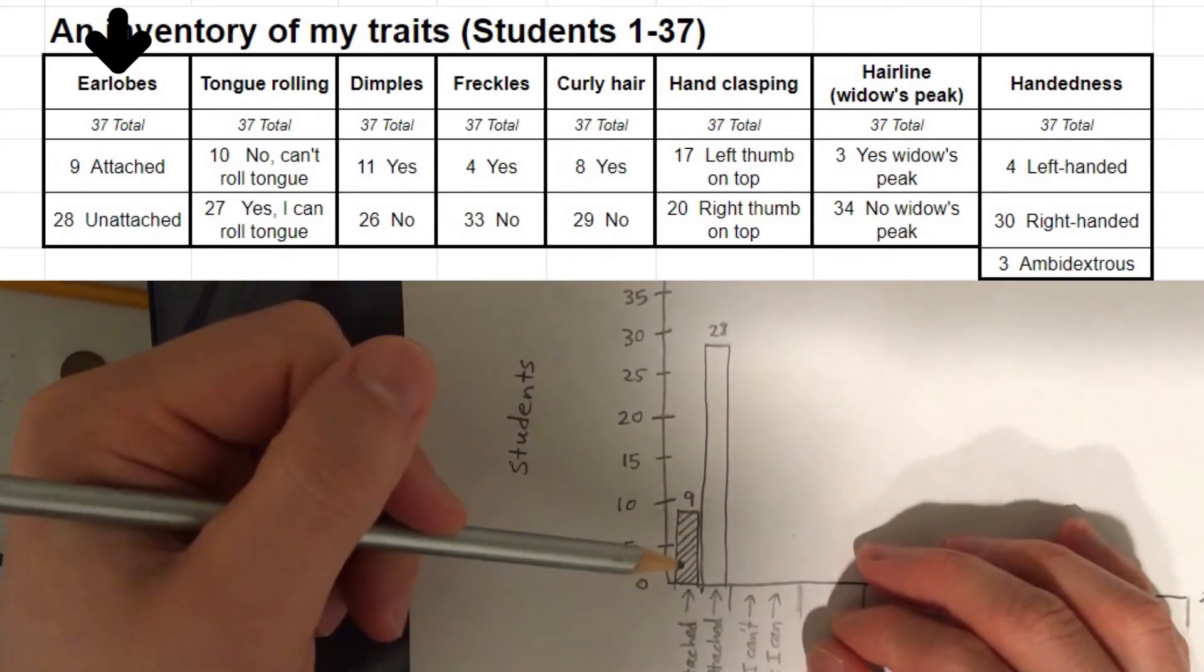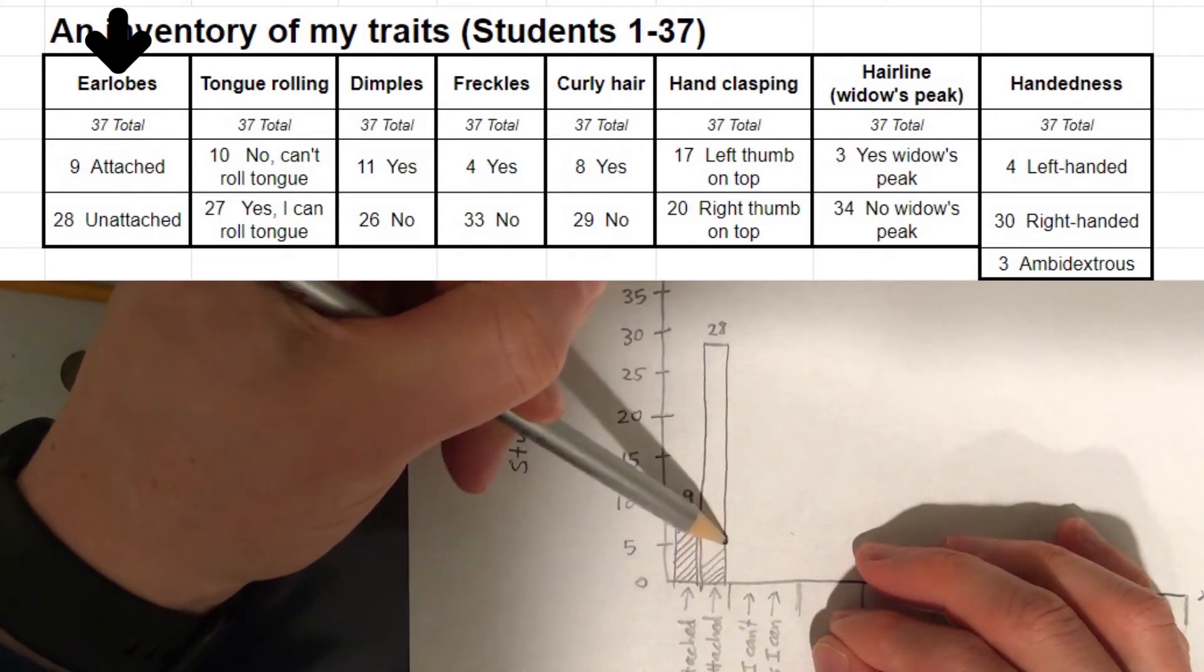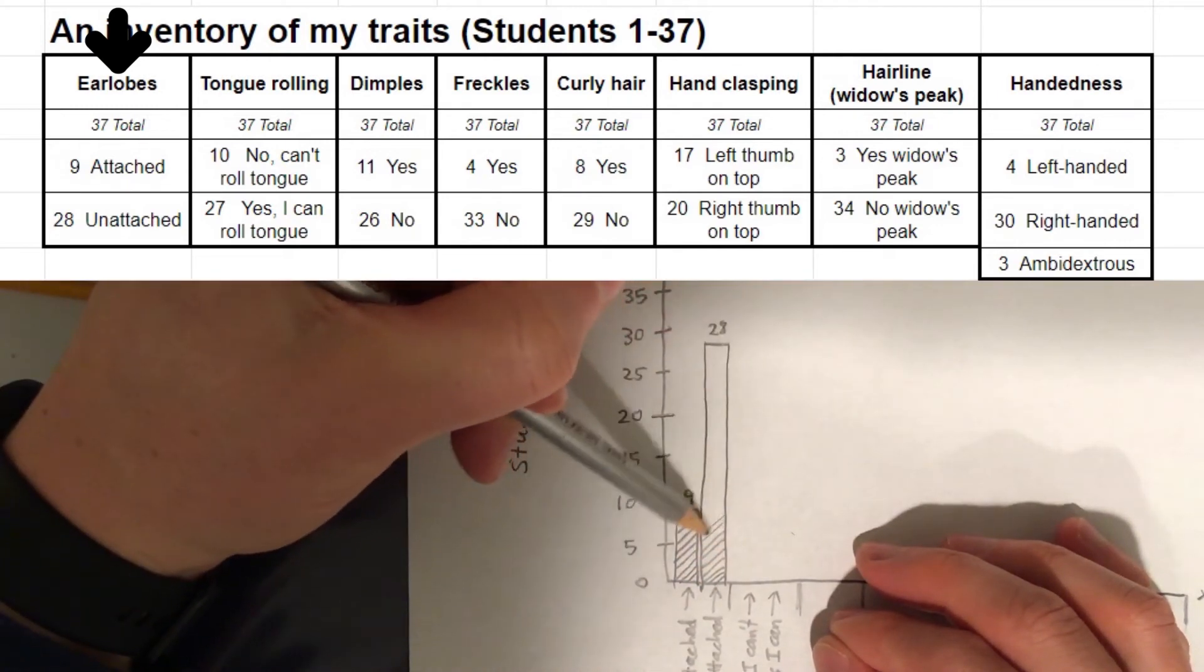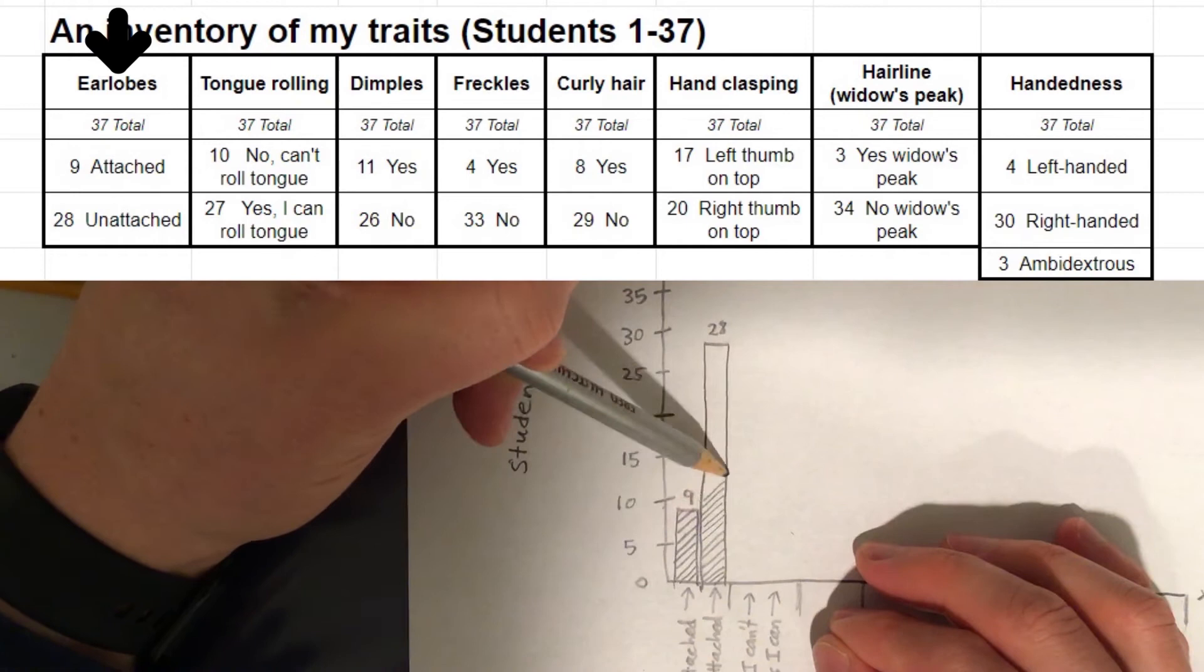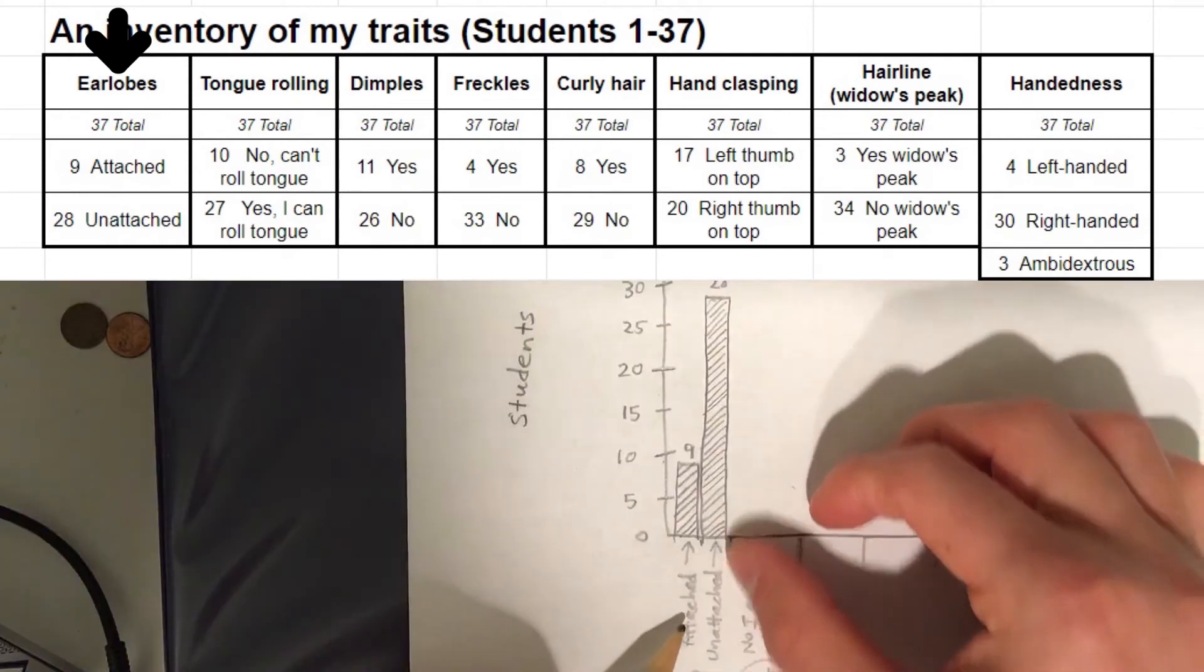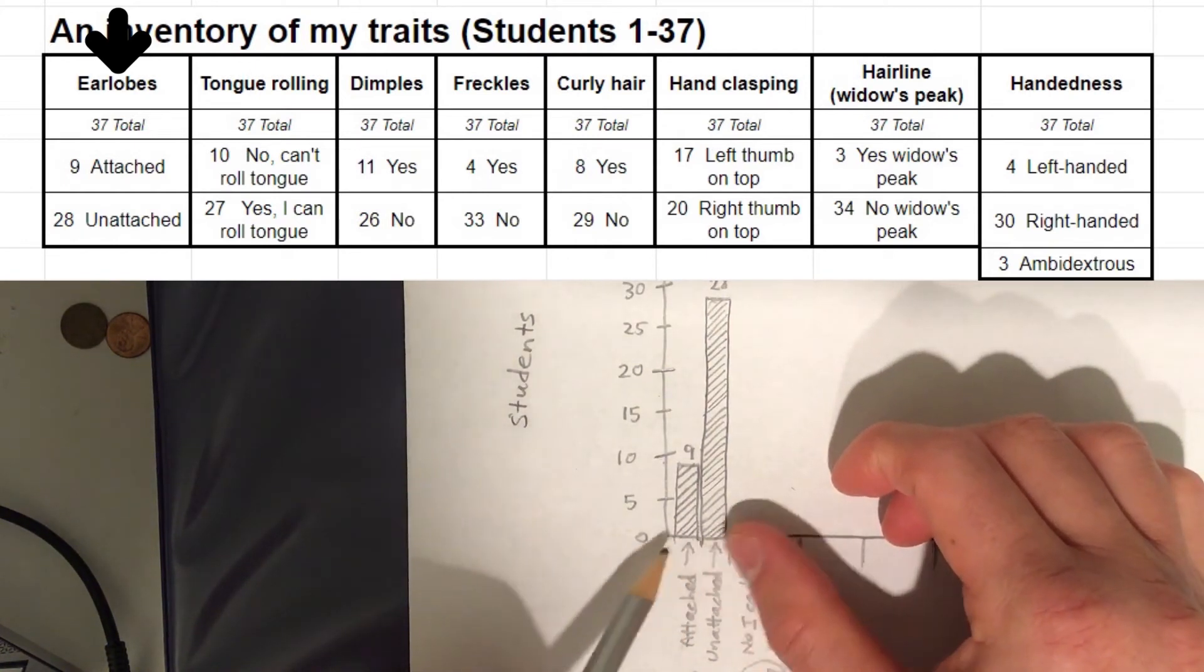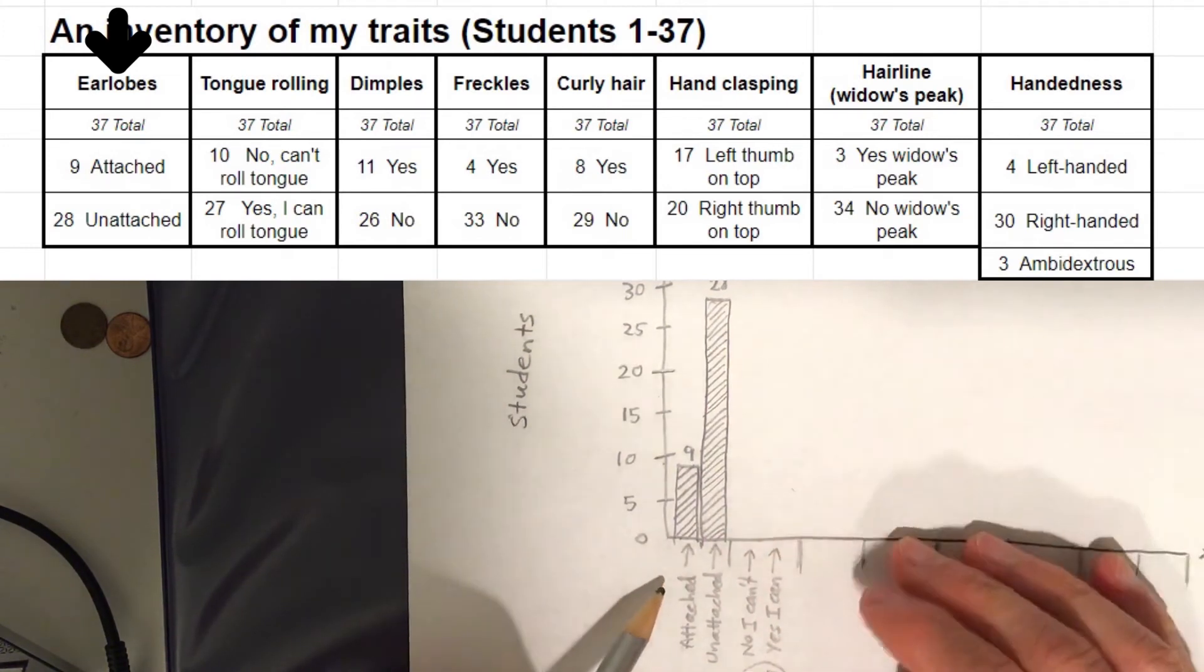For this one, I'm going to do diagonal lines. And unattached earlobes is 28. 28 students have unattached earlobes. So I'm going to go all the way up here, 28 students. It's going to be below 30. Right about here. So this is going to be 28. 28 students have unattached earlobes. So I'm going to bring down that bar for the graph. And I'm going to put them side by side so you can compare the two. Attached, nine. Unattached is 28. I'm going to do the same design for this one. The same pattern just to show that they go together. And then I'm going to do a different pattern for tongue rolling.